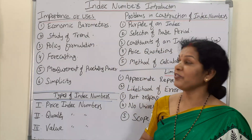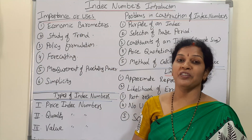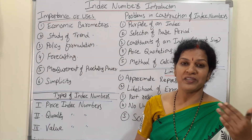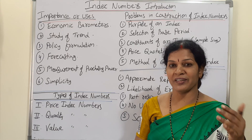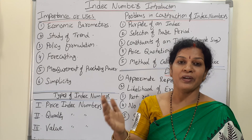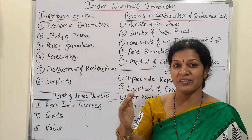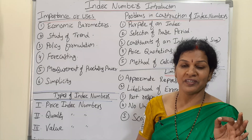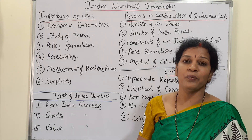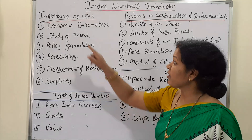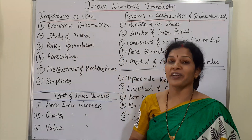Now, the first topic: importance and uses of index numbers. The first use is economic parameters. From an economic point of view it is very useful — prices are increasing or decreasing, economic factors, the progress of our country, economic policies, GDP rate — all these things are indicated exactly through index numbers.